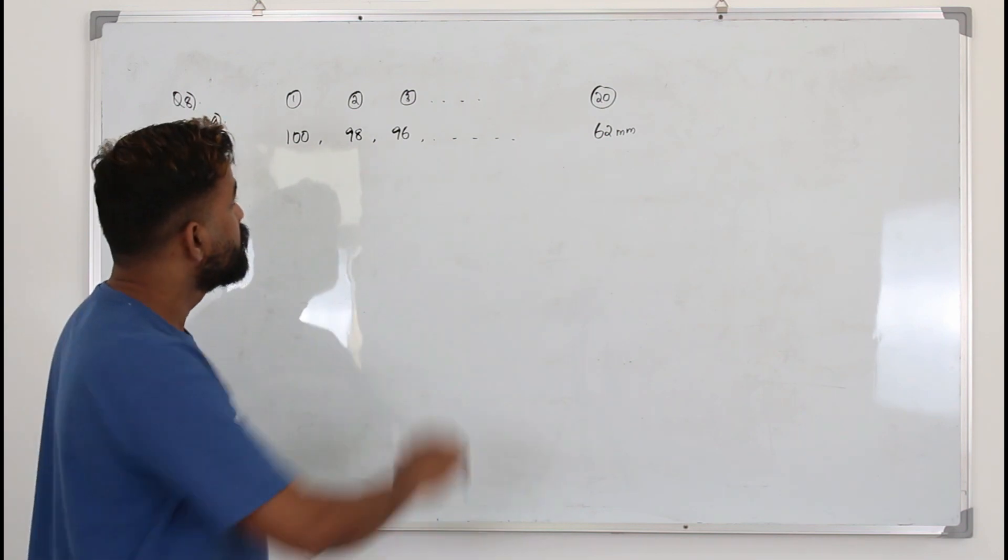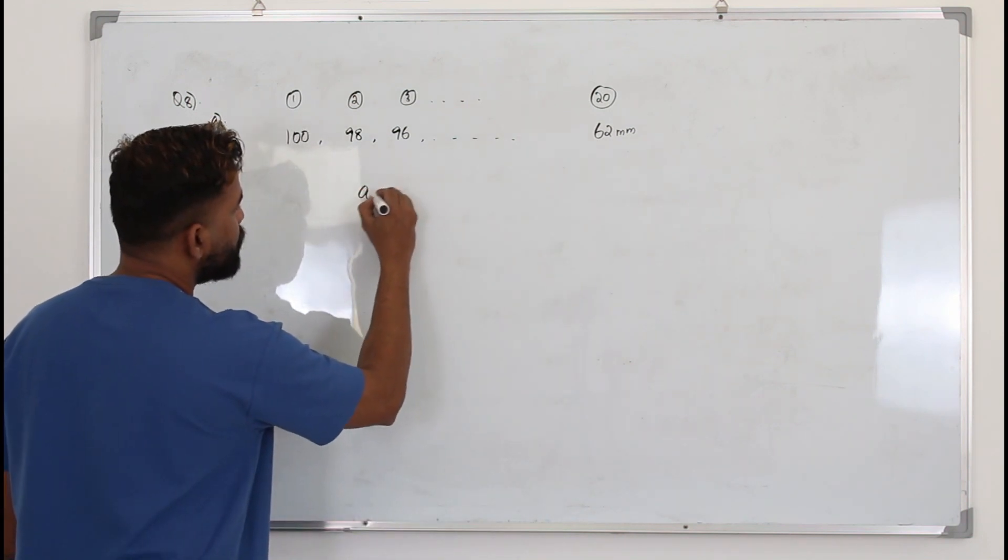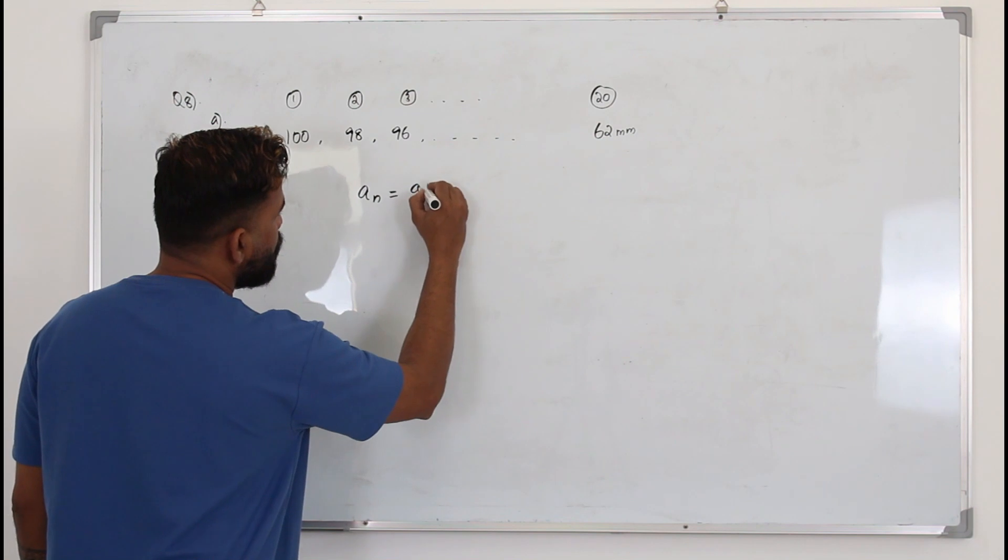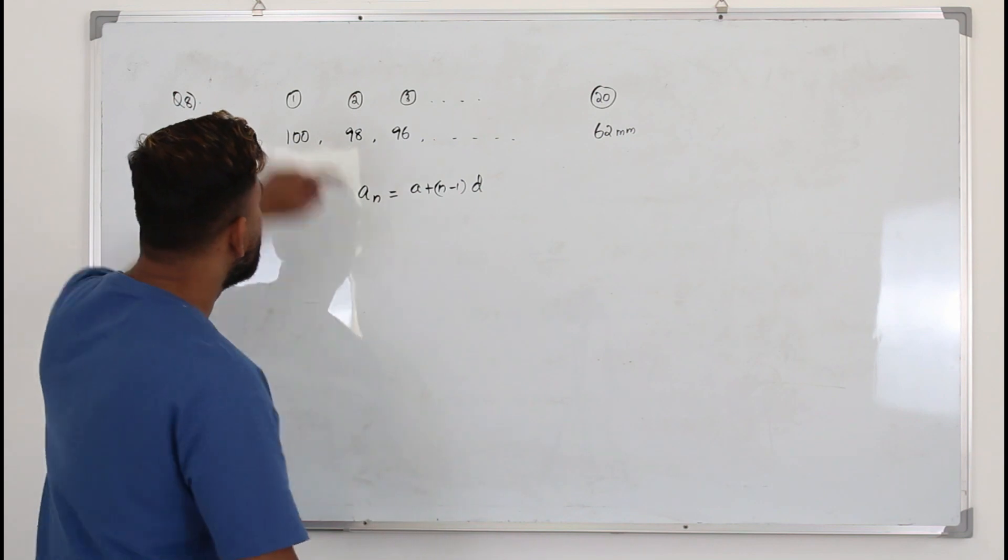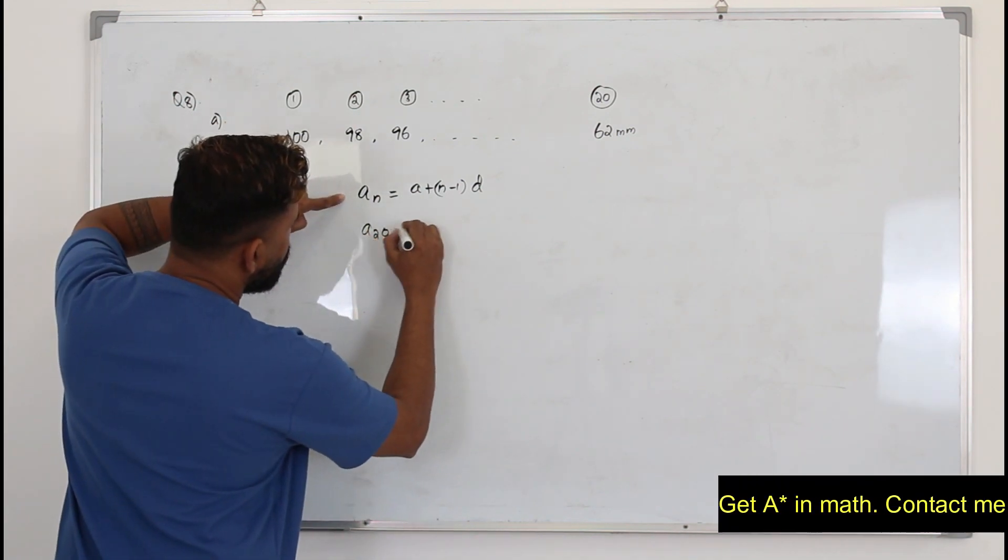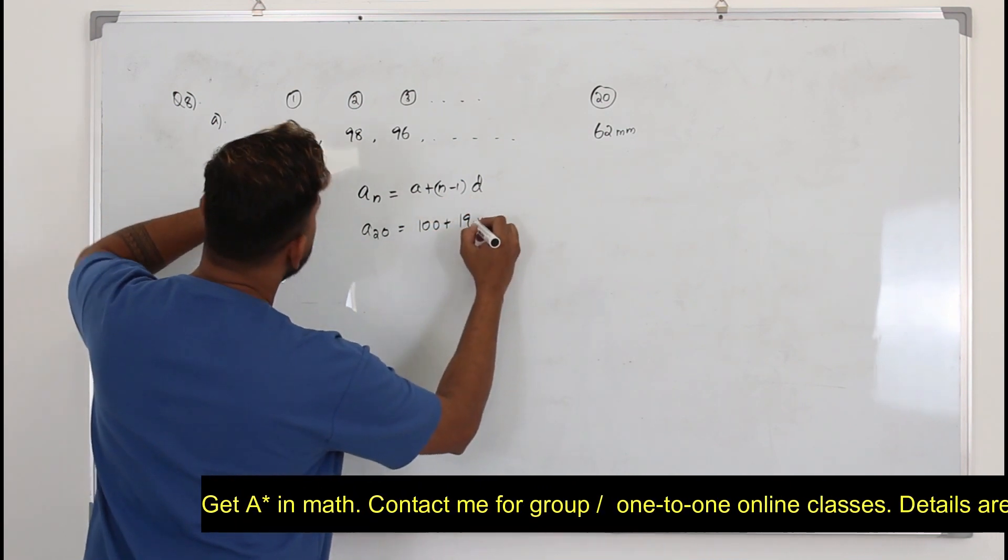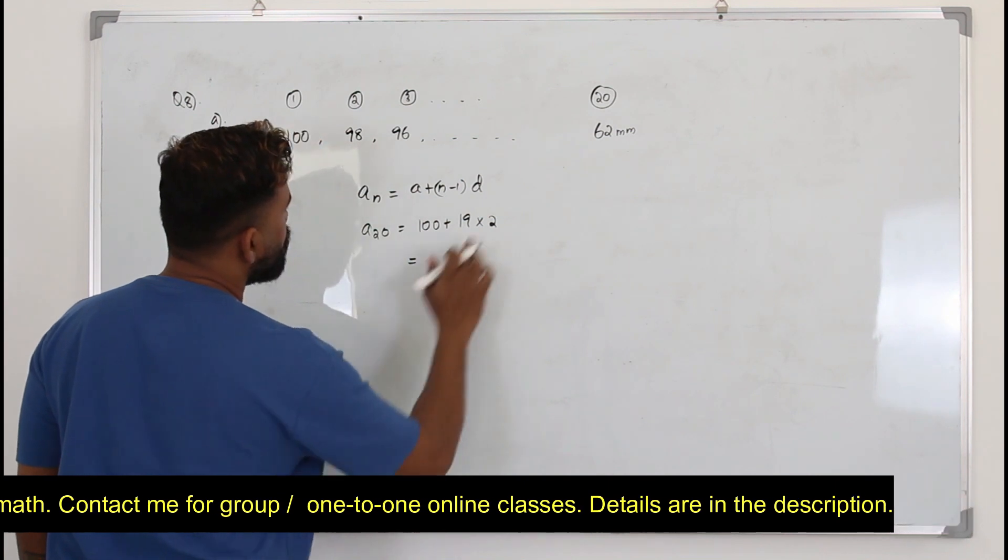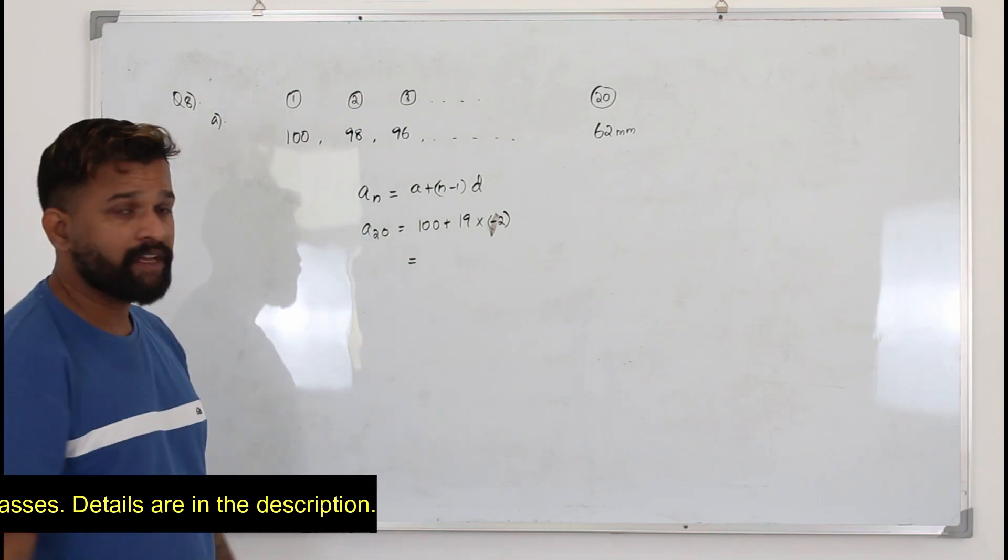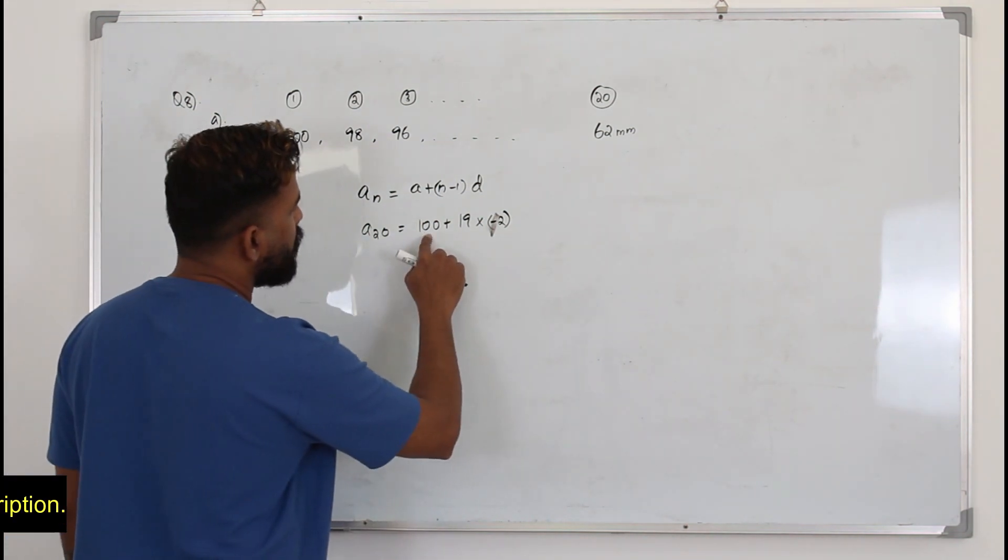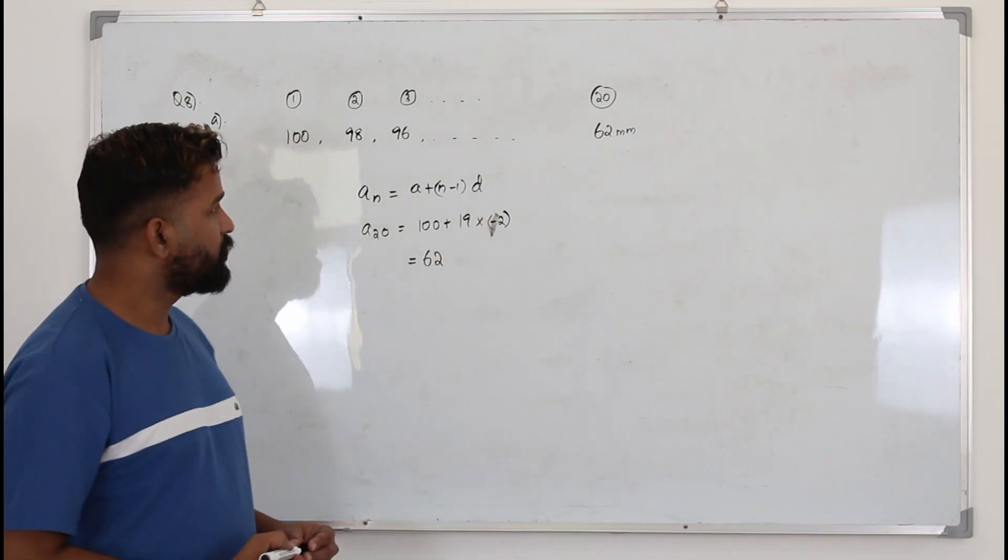If you put it as a sequence, this is an arithmetic sequence because we have a same common difference. To find the 20th term, a_n = a + (n-1)d. So a_20 will be 100 + (20-1) times the common difference, which is negative 2. That's 100 minus 38 equals 62, so the 20th term is 62.